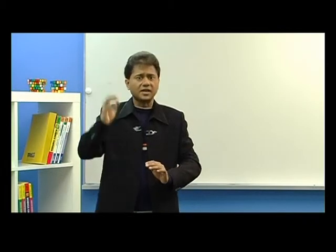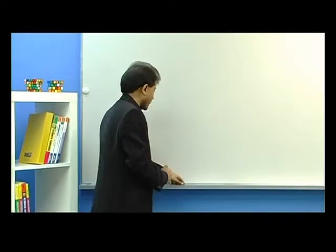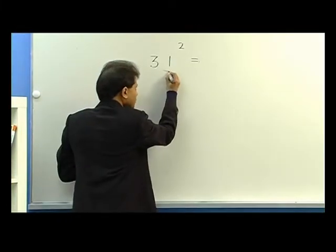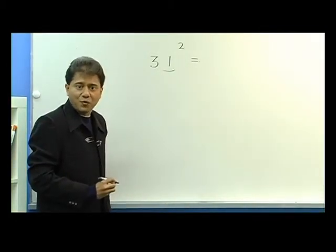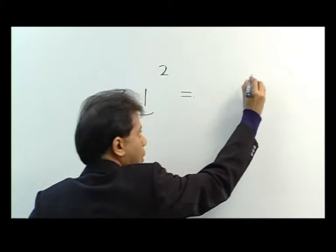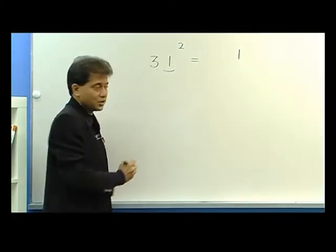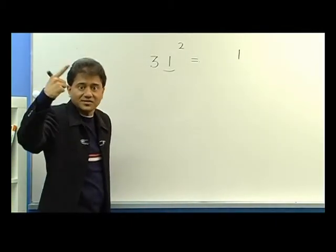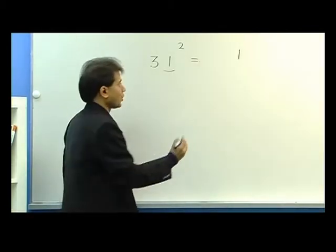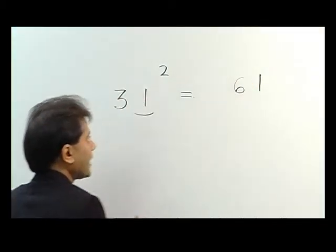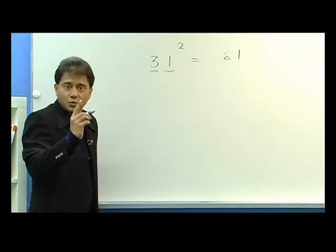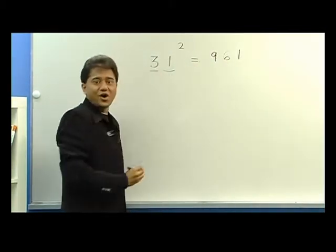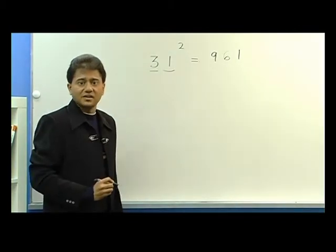Now I'm going to explain how to square any two-digit number. Let me start with an example: 31 squared. We first take the square of 1, which is 1, so we write 1 at the end. Now we do 3 times 1, which is 3. Double this — double of 3 is 6 — so I write 6. Now square of 3 is 9, so we write 9. And this is your answer.